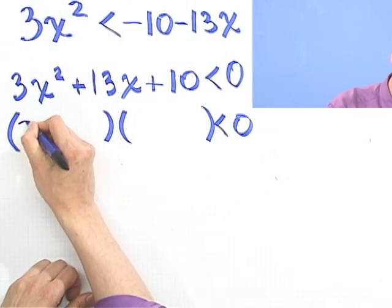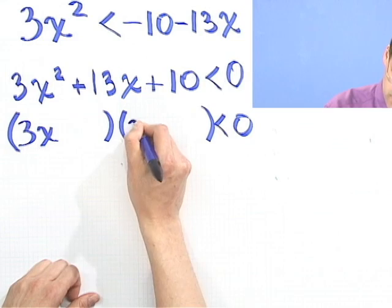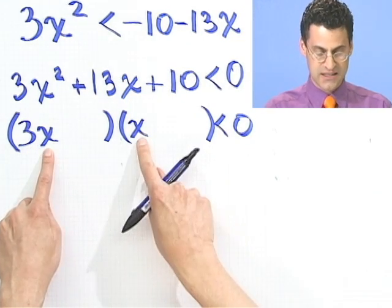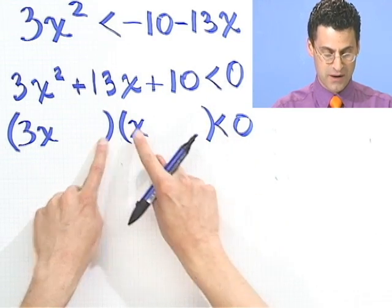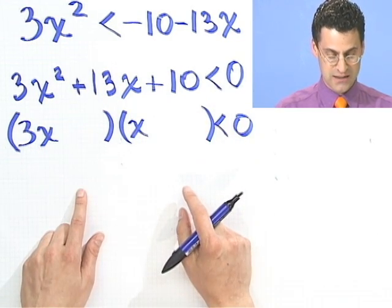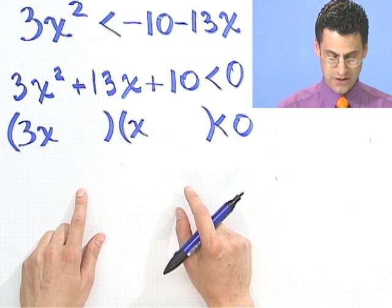So I want to find out all the values I could plug in here for x which will make this number negative. That's the goal. What I'm going to try to do is I'm going to try to factor this.